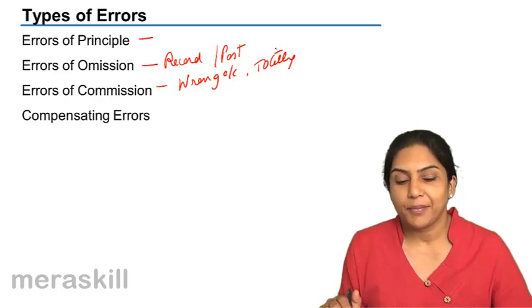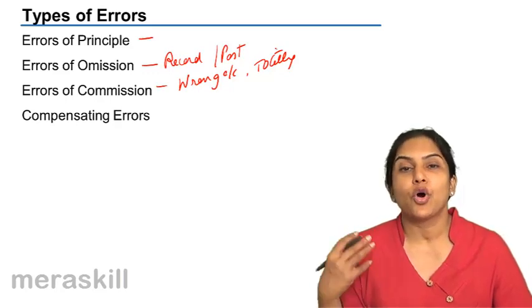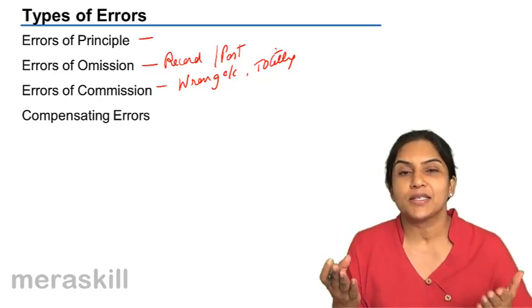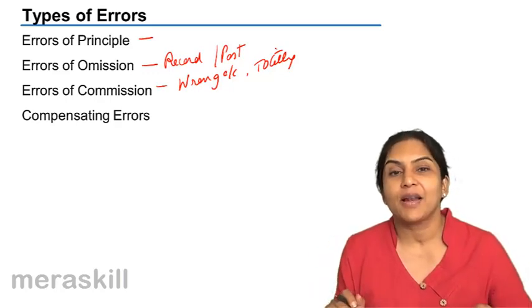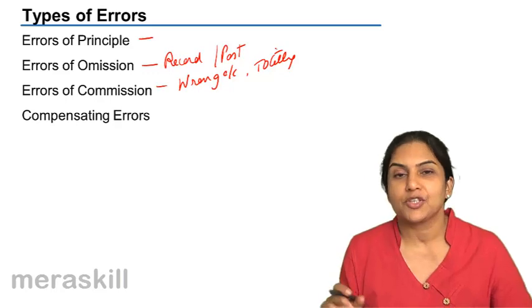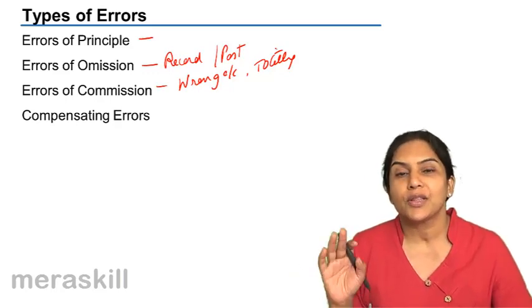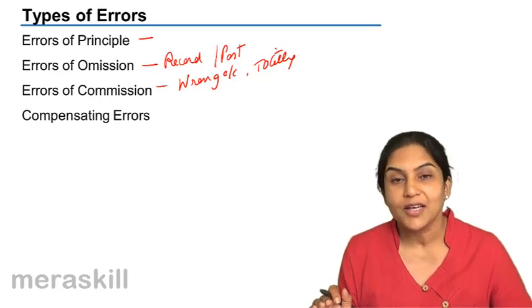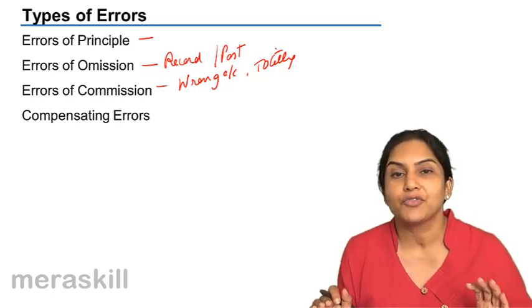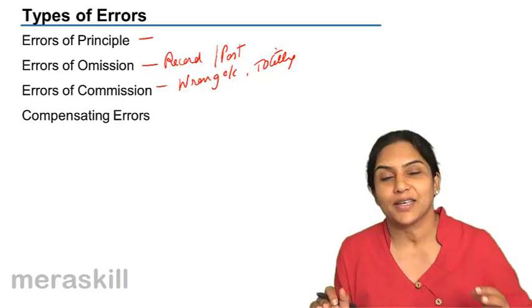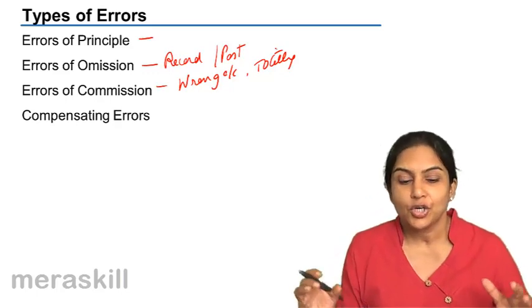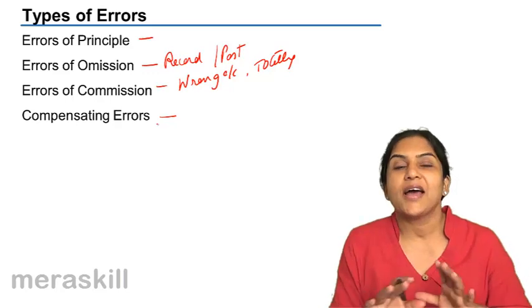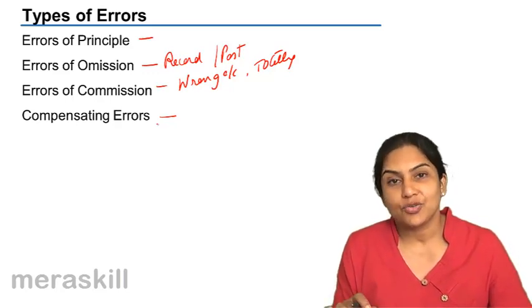Compensating errors may be two or more errors in such a manner that the balances even out and the trial balance agrees. For example, if there has been an excess credit of 50,000 due to two journal entries, and an excess debit of the same amount due to another three entries, together these errors compensate one another and the trial balance tends to agree.